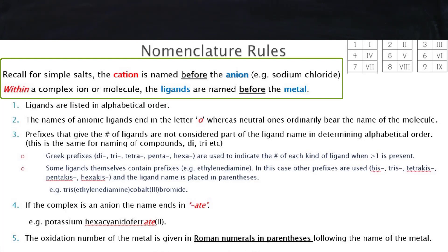When we're writing the name within the complex, we write the ligand's name before we write the metal's name. Even though the metal may be written first in the formula, you always put the ligands first and the metal second in the name.